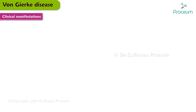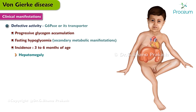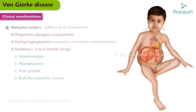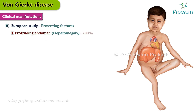Now let's talk about the clinical manifestations. Defective activity of either G6Pase or its transporter leads to progressive glycogen accumulation, mainly in the liver, and fasting hypoglycemia, which results in a number of secondary metabolic manifestations. Affected patients most commonly present between 3 to 6 months of age with hepatomegaly, signs and symptoms of hypoglycemia, poor growth, and doll-like faces, particularly with fat cheeks. In the European study, a protruding abdomen resulting from hepatomegaly was found in 83% of all cases.